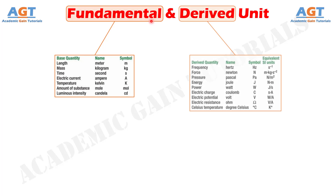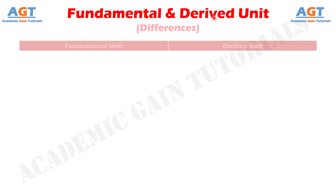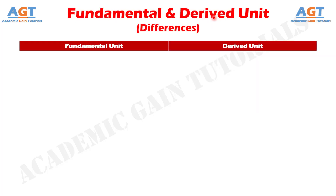On the other hand, those units which can be expressed in terms of the fundamental units are called derived units. Some examples are speed, velocity, acceleration, etc. So, let's look into the basic differences between fundamental unit and derived unit in a tabular form.